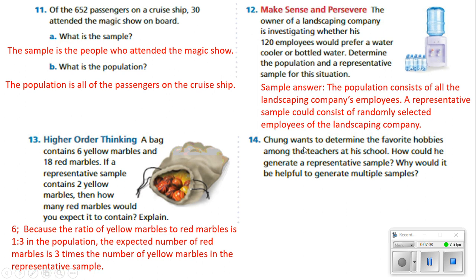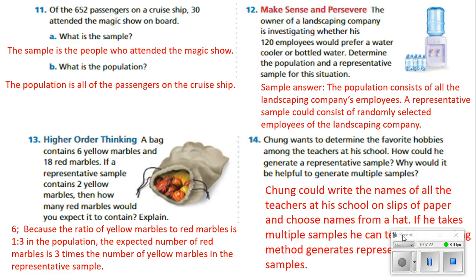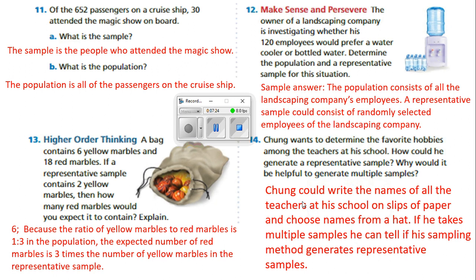Number 14. Chung wants to determine the favorite hobbies among teachers at a school. How could he generate a representative sample, and why would it be helpful to generate multiple samples? Chung could write the names of all the teachers at the school on slips of paper and choose names from a hat. If he takes multiple samples, he can tell if his sampling method generates representative samples.